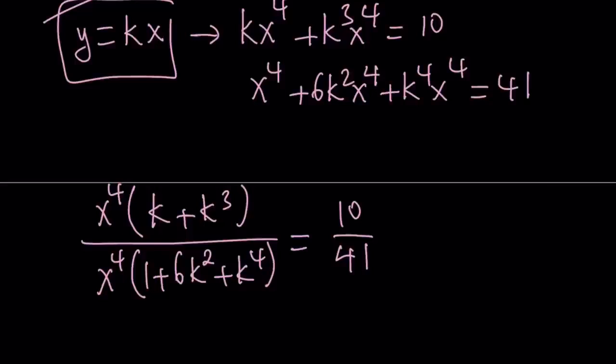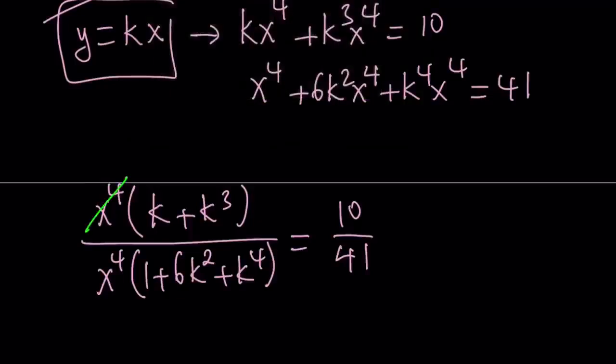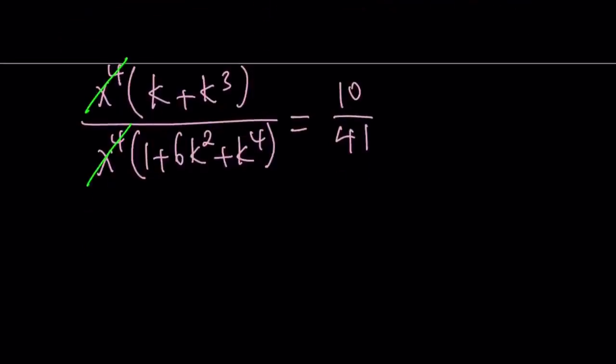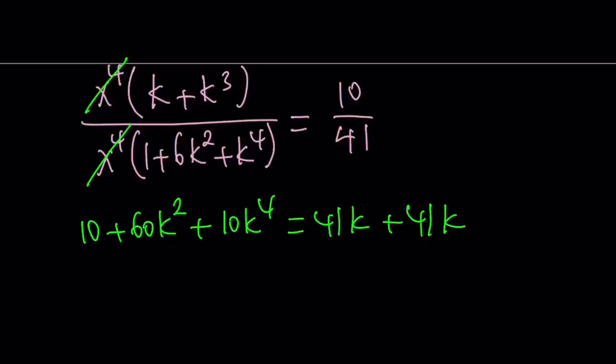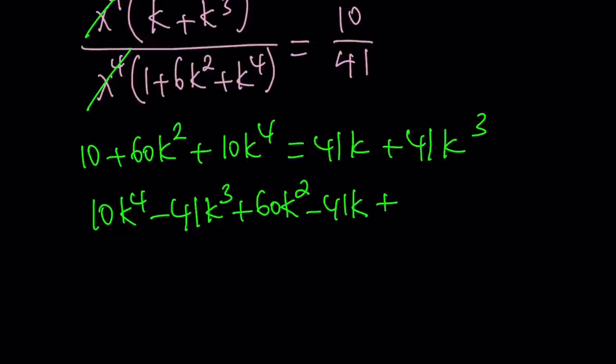This doesn't look very good now, but we're going to be able to simplify this and reduce this into a single variable equation. Now this becomes a quartic equation in k. If you cross multiply, you get 10 + 60k² + 10k⁴ = 41k + 41k³. And putting everything on the same side, you get 10k⁴ - 41k³ + 60k² - 41k + 10 = 0.